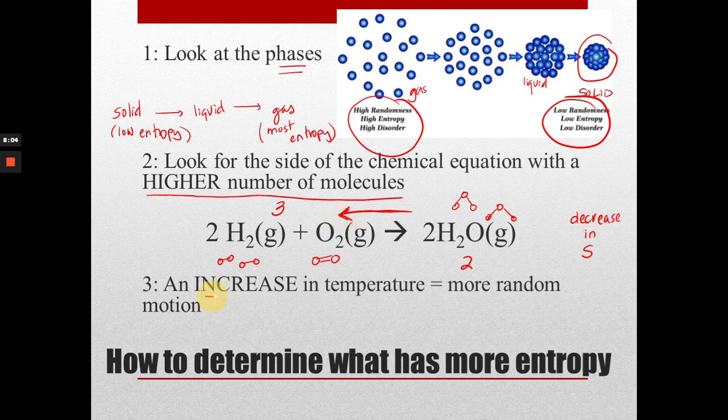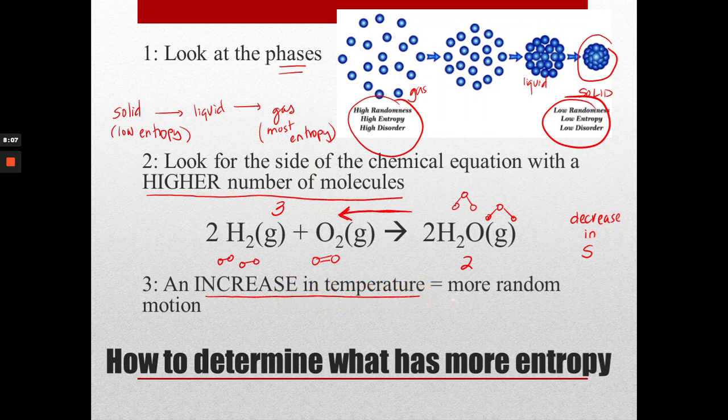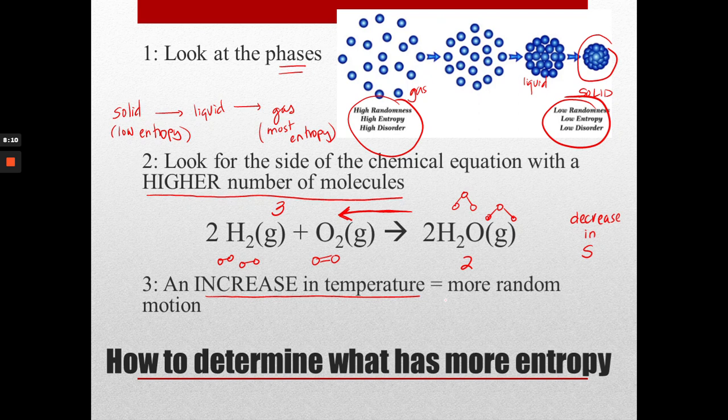And then the last thing we look for is temperature. Sometimes there's temperature information given. An increase in temperature causes the molecules to move more. And if they move more, then they have more motion. And more motion means more randomness, and more randomness means more entropy. So when we're looking to determine what has more entropy, we're not doing calculations really. We're looking for the clues. We're looking for the phases. We're looking for if everything is gas. We're looking for which side has more or less gas to know if entropy is increasing or decreasing. And if there's temperature information, we can consider the temperature of the system and know that the hotter it is, the more the molecules are moving, so the more random and disordered they will be.